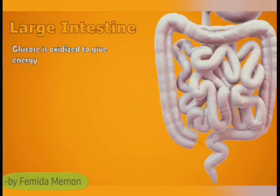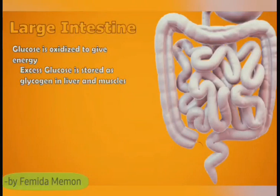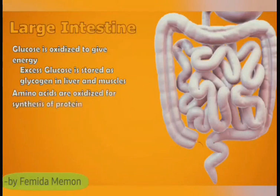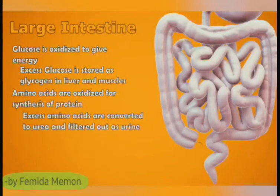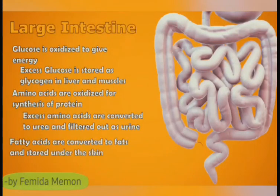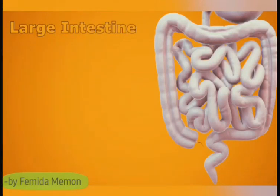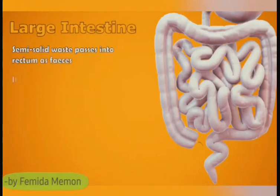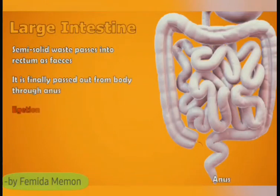Glucose is oxidized to get energy. Excess glucose is stored as glycogen in the liver and muscles, which can be reconverted to glucose when required by the body. Amino acids are utilized in the synthesis of proteins. Extra amino acids are converted to urea, which is filtered out through the kidneys in the form of urine. Fatty acids are converted to fats and stored under the skin. This overall absorption process is known as assimilation. As water is absorbed in the large intestine, the semi-solid waste passes into the rectum as faeces, and is finally passed out from the body through the anus — this process is known as egestion.